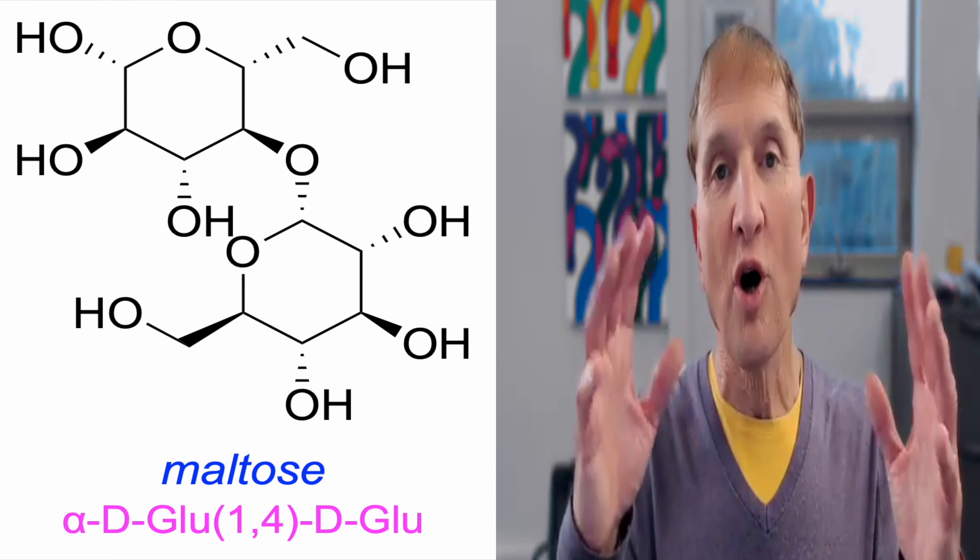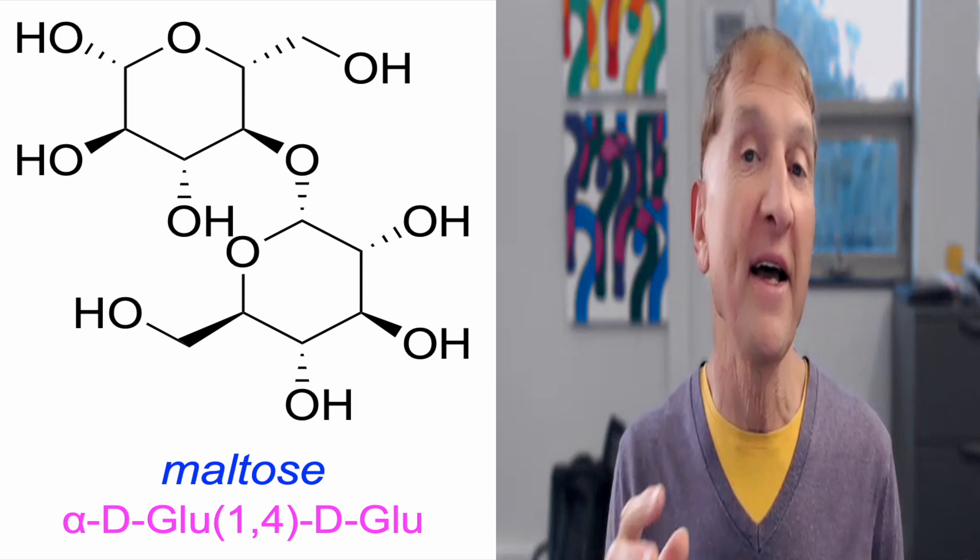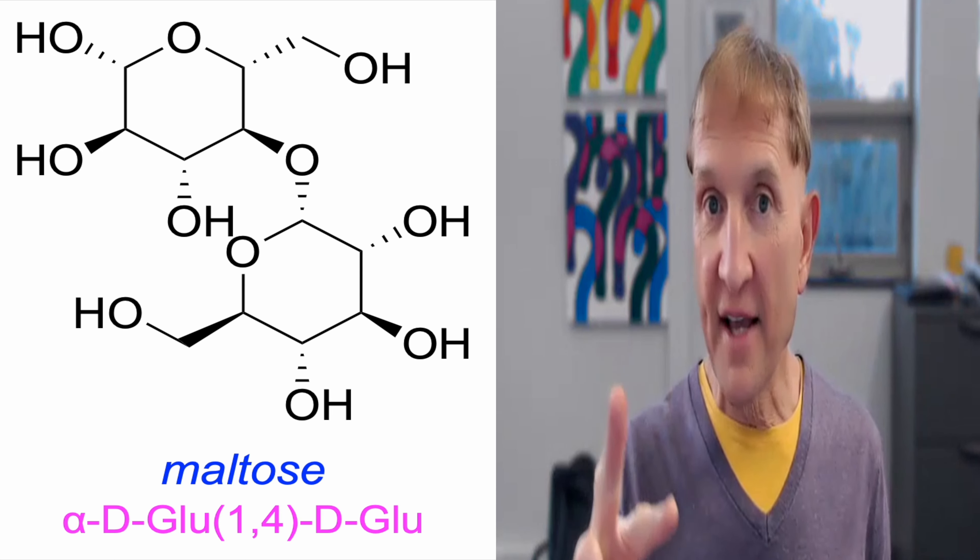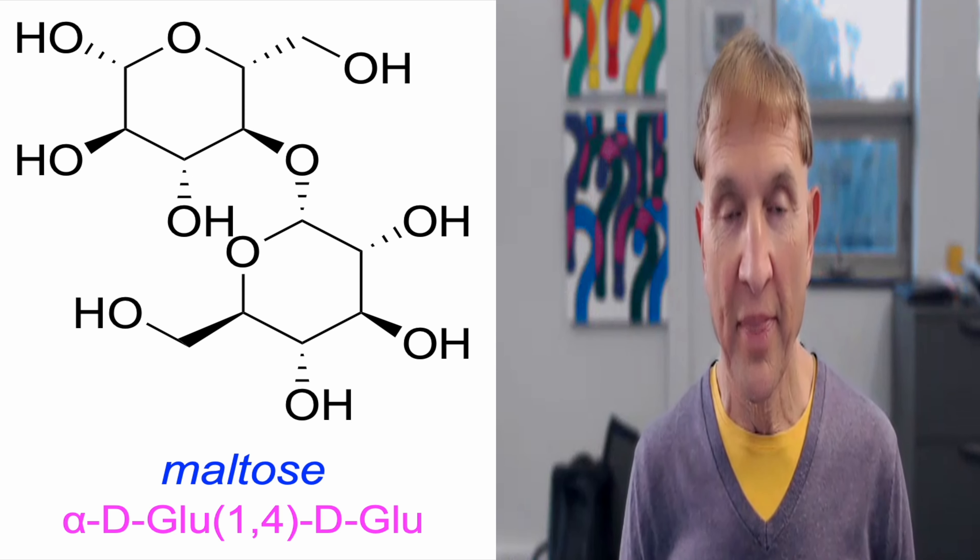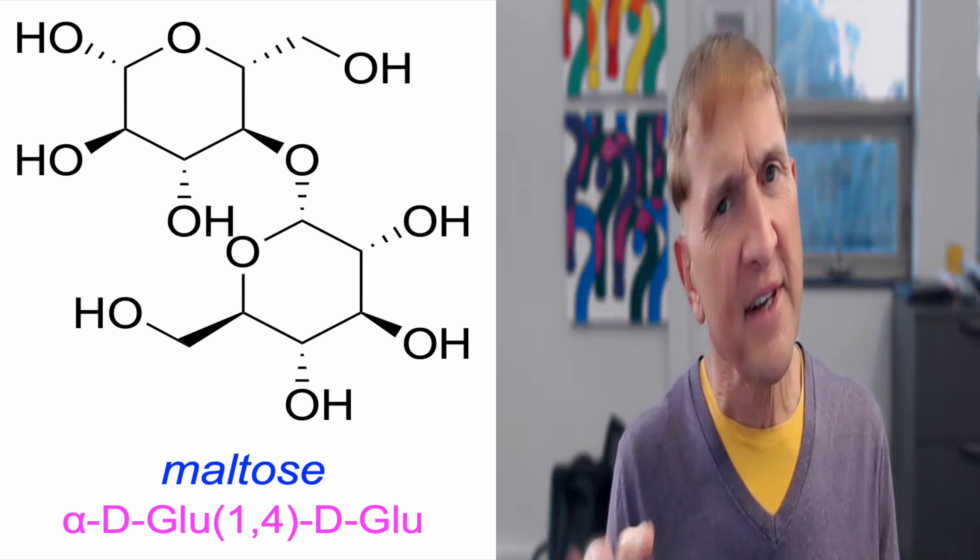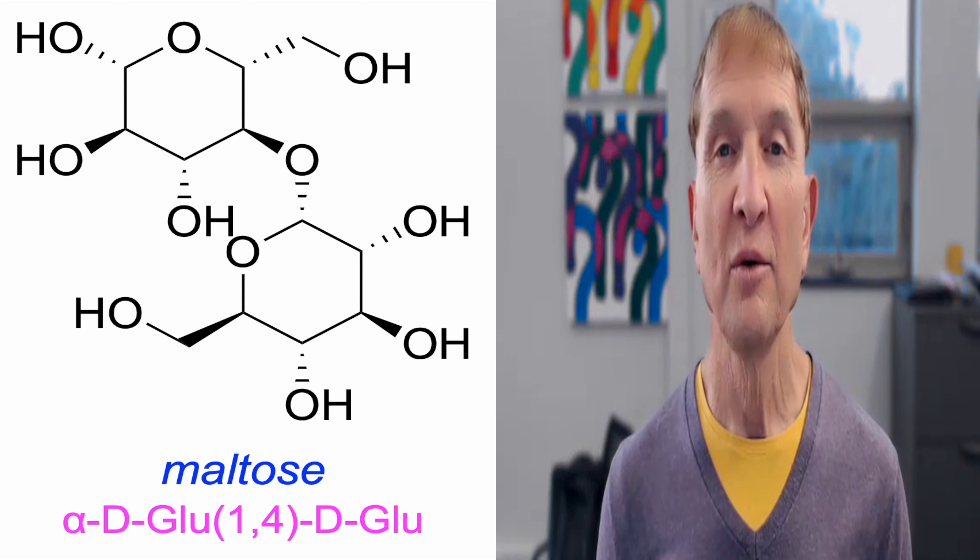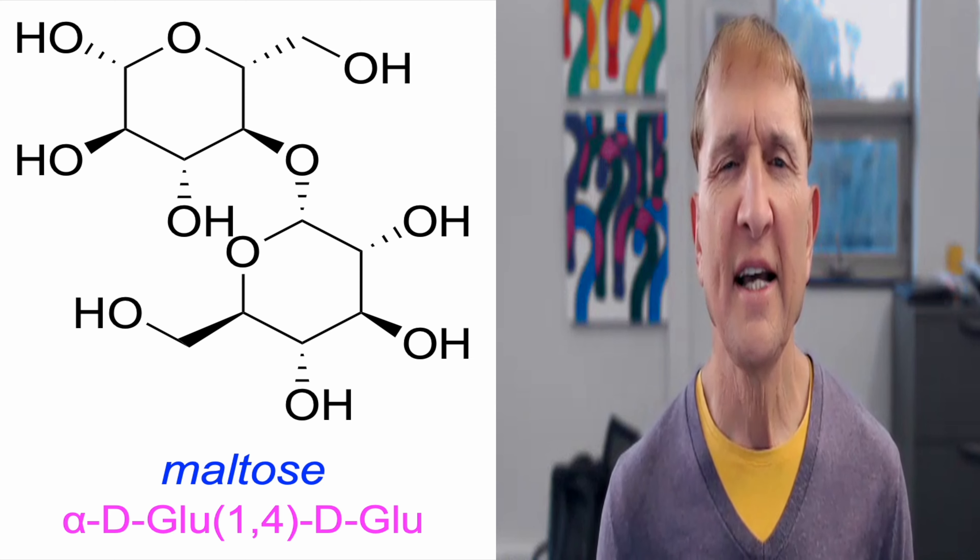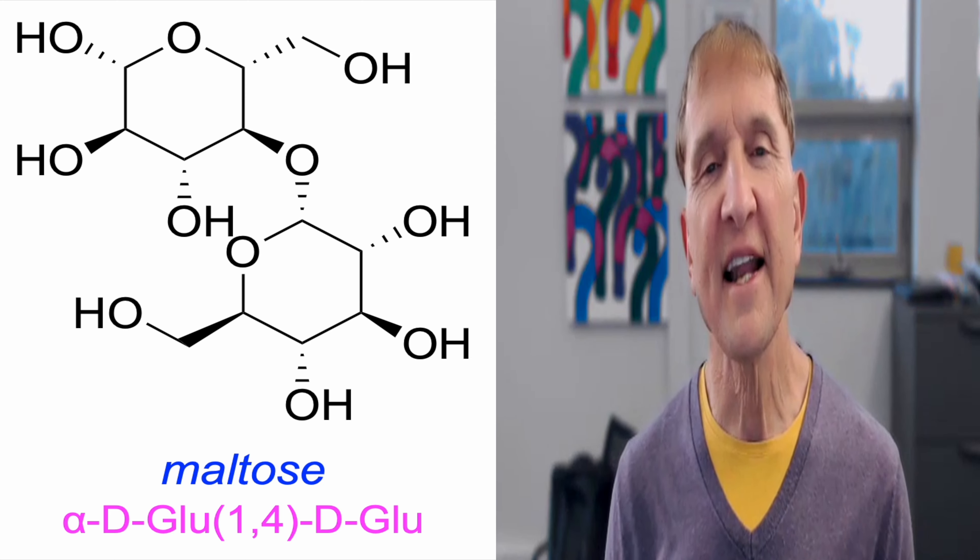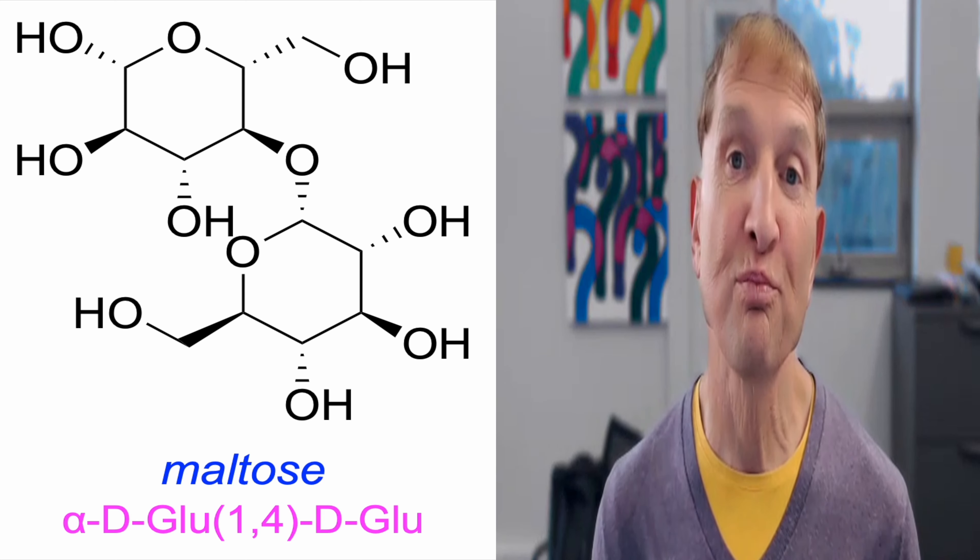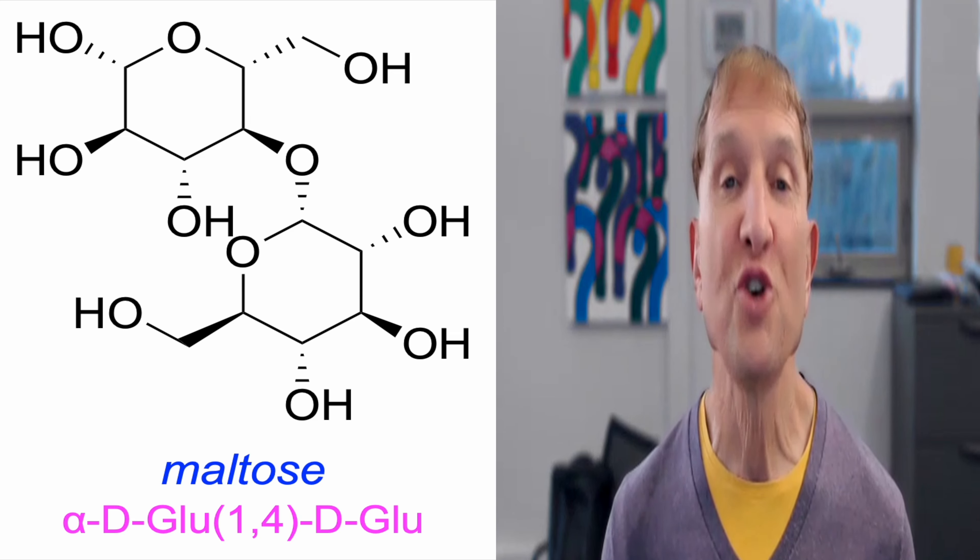Maltose is a dimer of glucose. When starch is broken down by amylase, it gives disaccharides of galactose and glucose. That's maltose. Maltose is about 30% as sweet as sugar. If you ever tasted maltose sugar, it doesn't have the same sweetness as sucrose. It was incidentally discovered by an Irish brewer making beer. Maltose is found in germinating seeds.